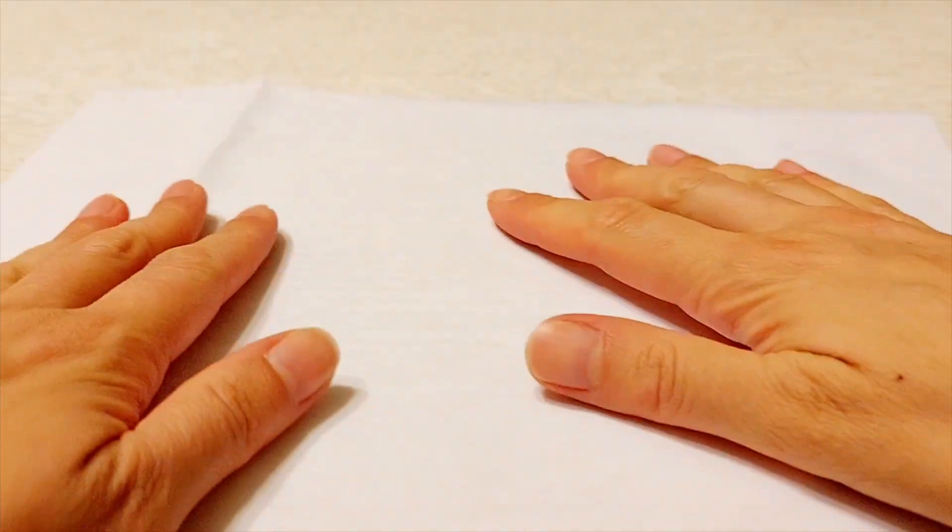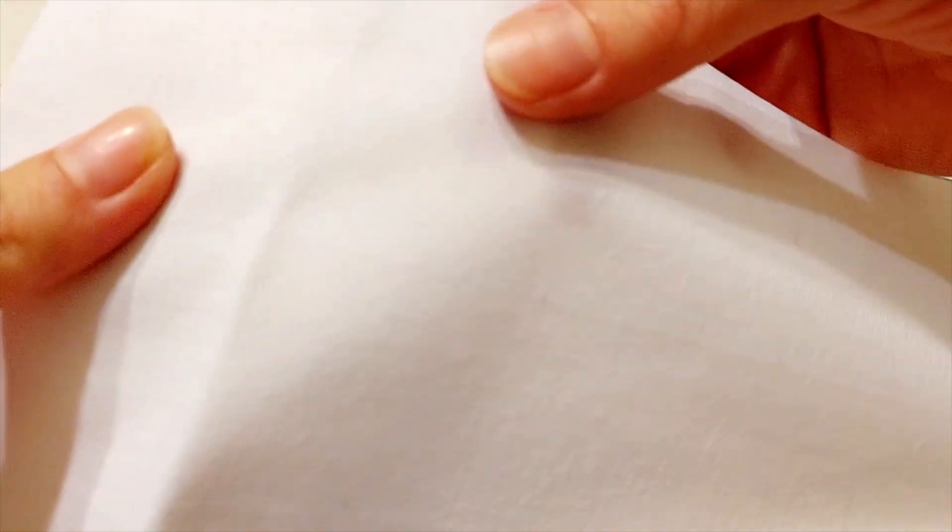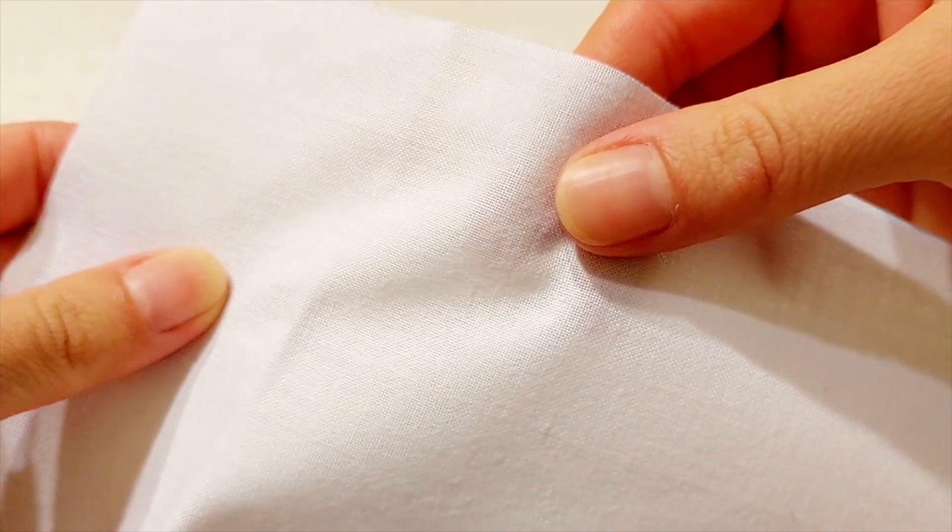First trace the paper sheet onto the fabric. I am using normal printer paper. Here is the fabric piece I will be using. Its size is A4 but if you live in the US yours will be US letter size. This is my paper sheet.